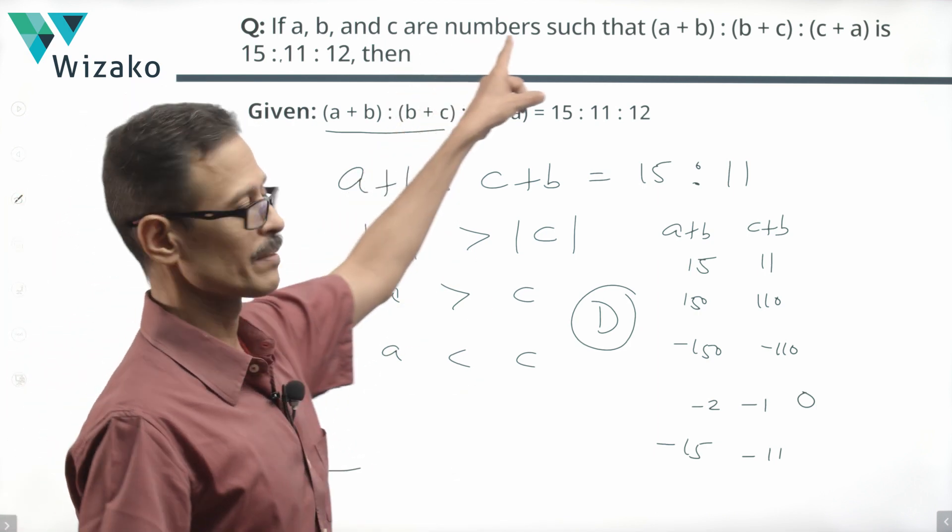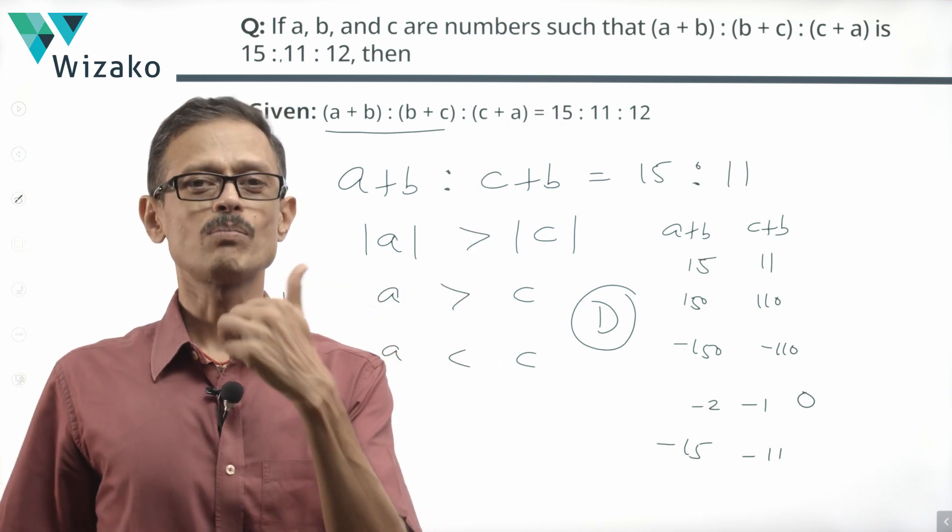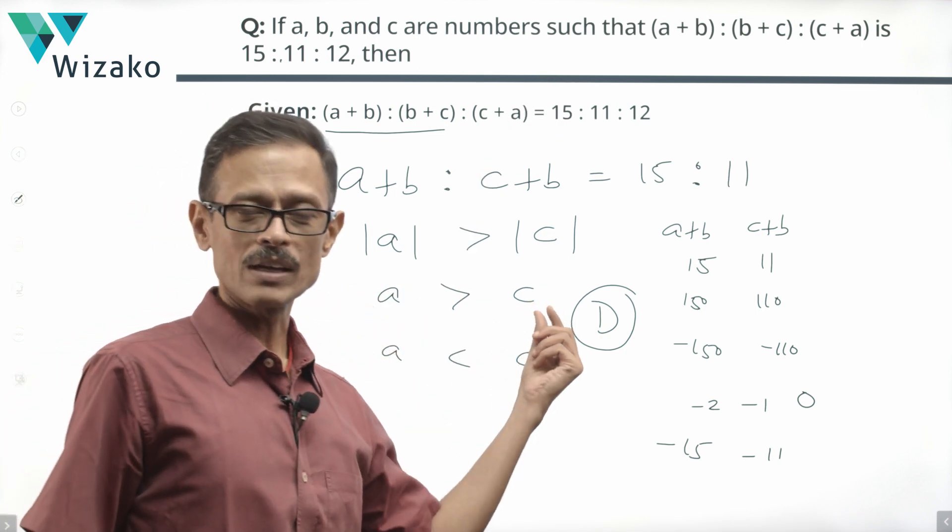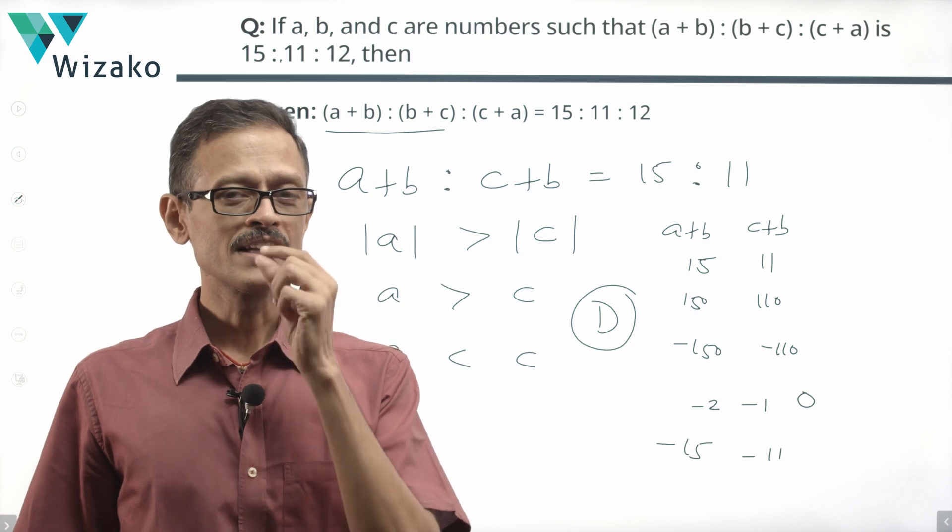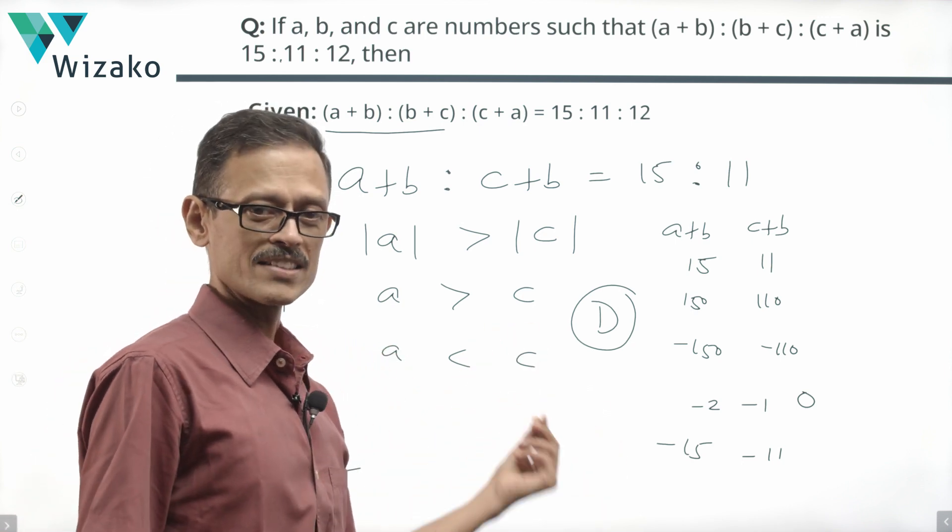Conversely, if the question had mentioned a, b and c are positive numbers, then A would have been the answer. Had it mentioned that a, b and c are negative numbers, then B would have been the answer.